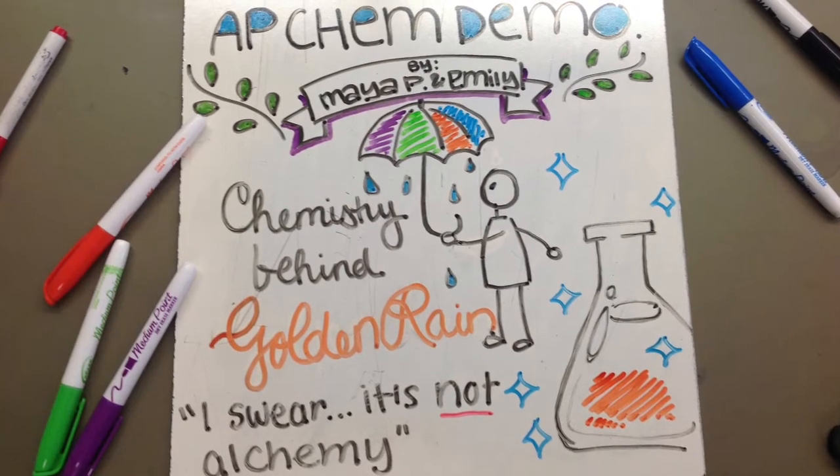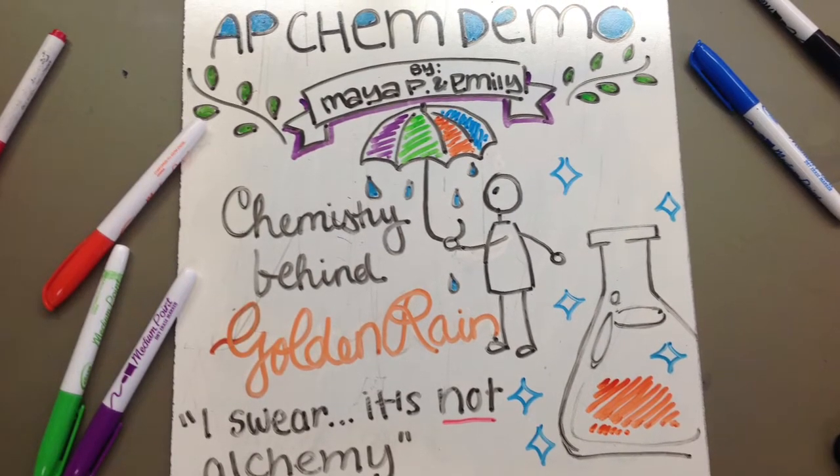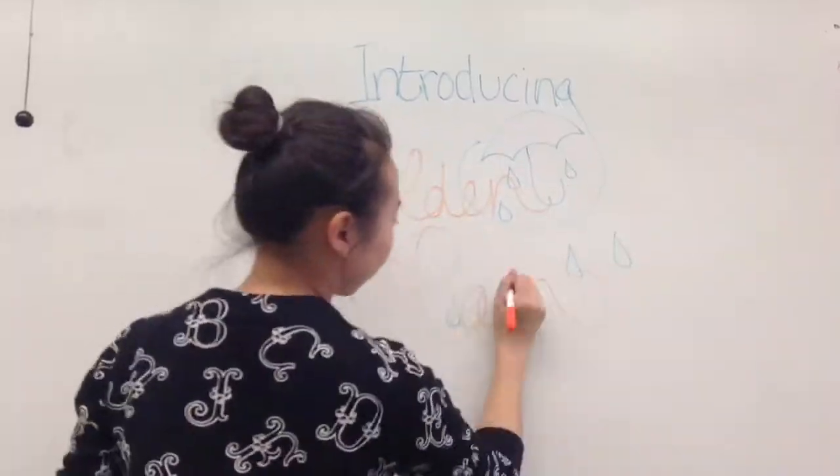For our AP Chemistry final project, we, Emily Kim and Maya Ponde, performed the experiment known as Golden Rain.